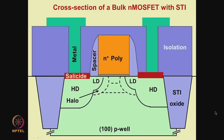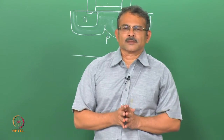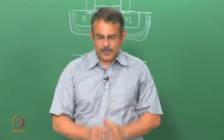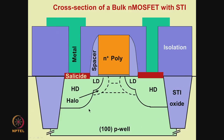In practice, a bulk MOSFET structure has many additional features not discussed here. One such feature is a halo implant region right next to the low-doped source and drain, used for a couple of reasons, one of which is prevention of punch-through.